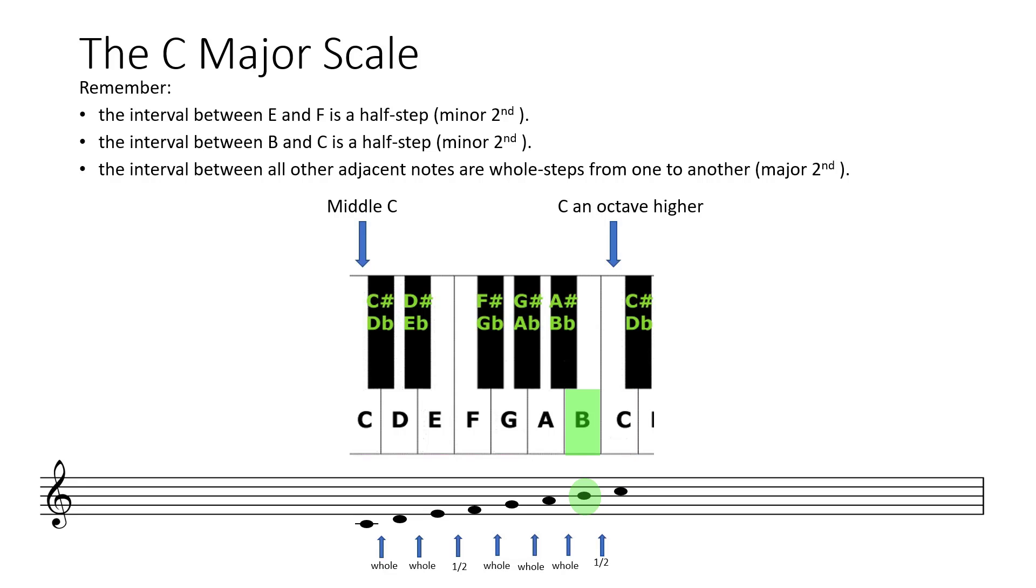The interval between B and C is a half step, minor second. The interval between all other adjacent white keys are whole steps from one to the next, major second.